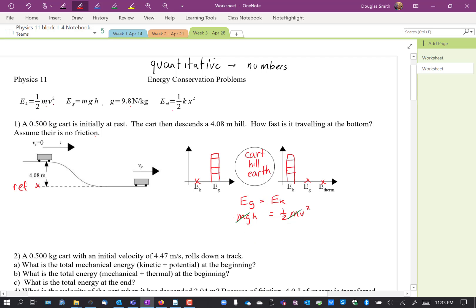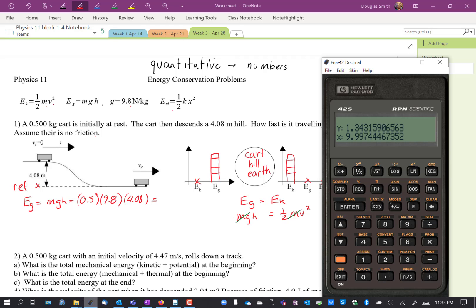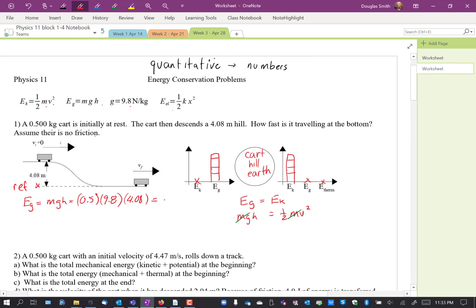So we could solve for V that way. Another way that would be common for students to solve is to calculate the things they know and then find the missing variable. So we actually know we can calculate EG. So the mass is 0.5 kilograms, 9.8 N per kilogram, height of 4.08 meters. Put that in the calculator. So half of 9.8 is 4.9, times 4.08 equals 19.992 joules.